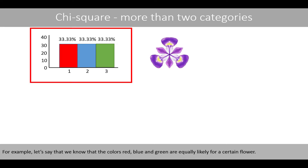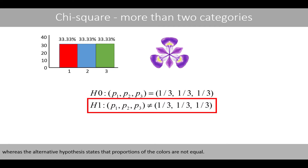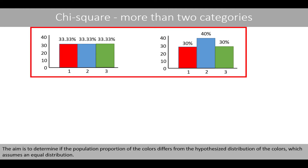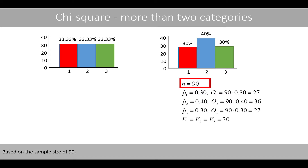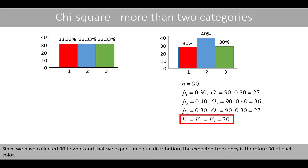For example, let's say that we know that the colors red, blue, and green are equally likely for a certain flower. We would then like to test if this is true for a certain forest where the flower is growing. The null hypothesis states that the colors are equally common among the flowers in the forest, whereas the alternative hypothesis states that the proportions of the colors are not equal. We take a random sample from the forest and observe proportions of colors based on 90 flowers. Since we have collected 90 flowers and expect an equal distribution, the expected frequency is therefore 30 of each color.